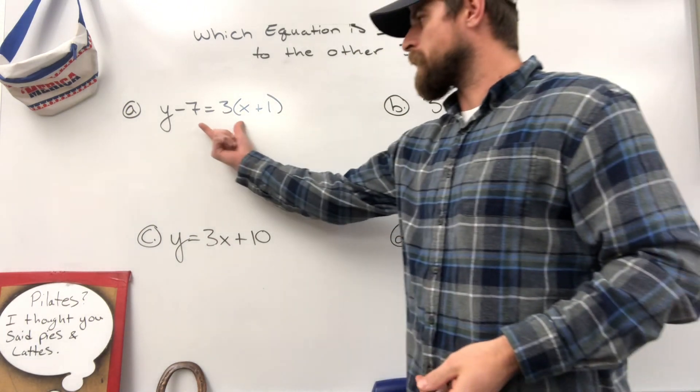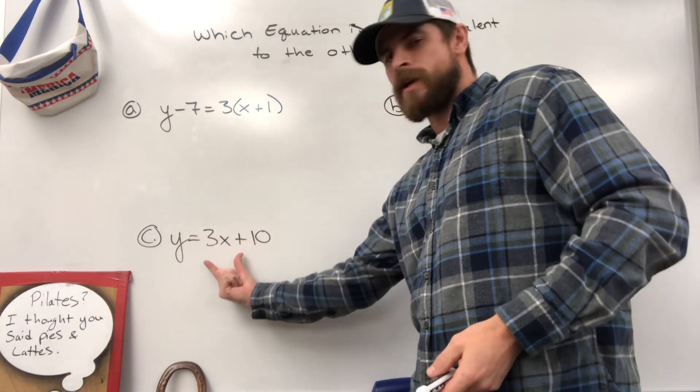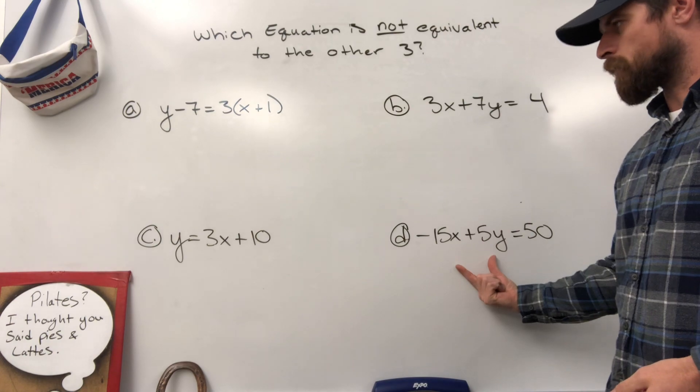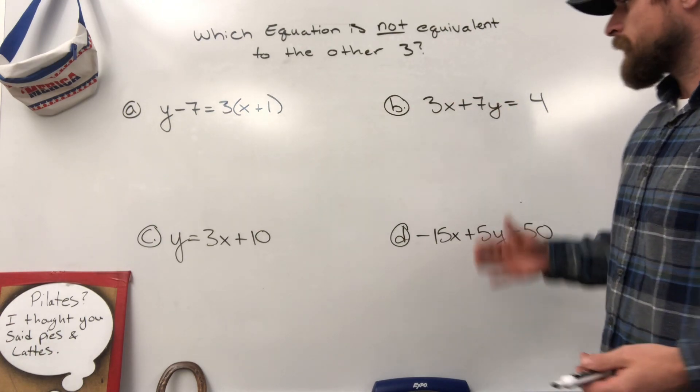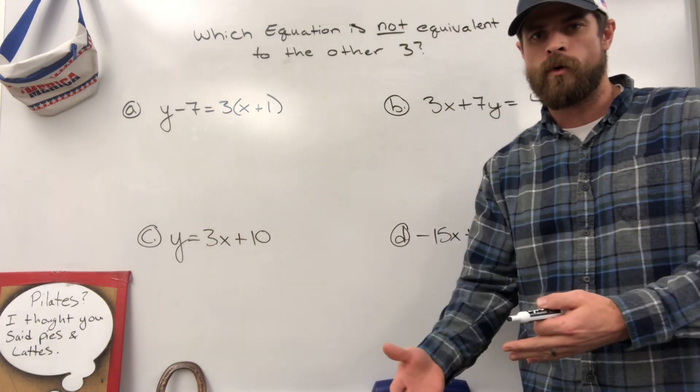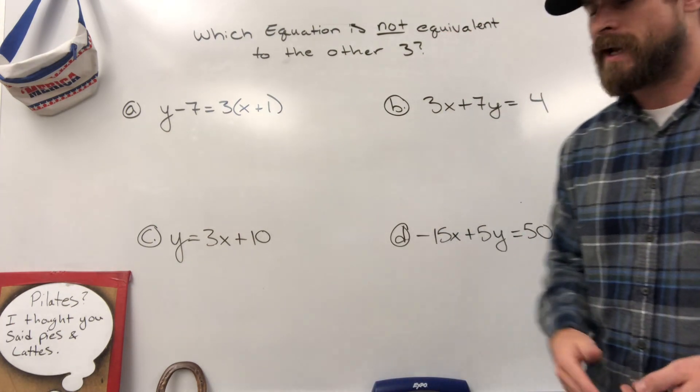Well, the problem is this is written in point slope form, this is written in slope intercept form, standard form, and standard form. So they're all written differently. That's why they don't appear to look the same right now. But if we can put them all into the same form, then we should be able to see if they match up.